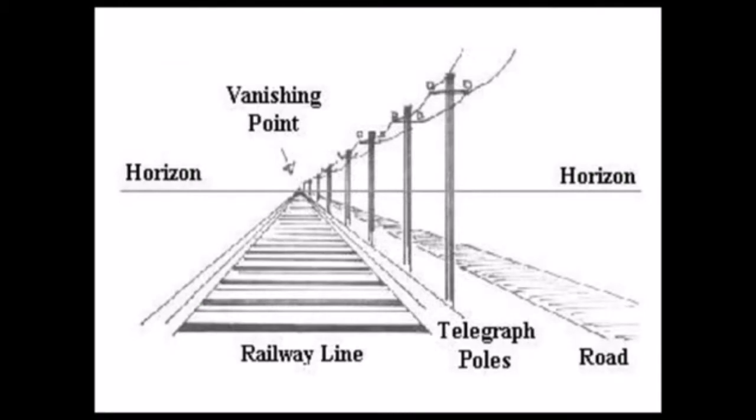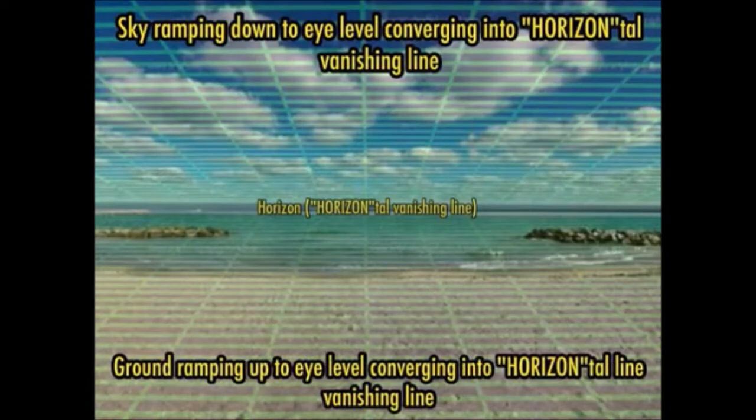All parallel lines, like those of a railway, seem to approach and finally to meet in the distance. Straight lines above the eye of the spectator appear to descend to the eyeline. The horizontal, or eyeline, is a straight line on a level with the eye, at whatever elevation the spectator may be.